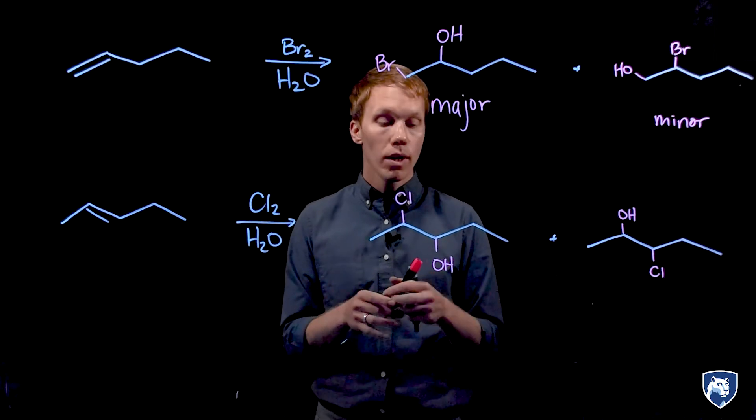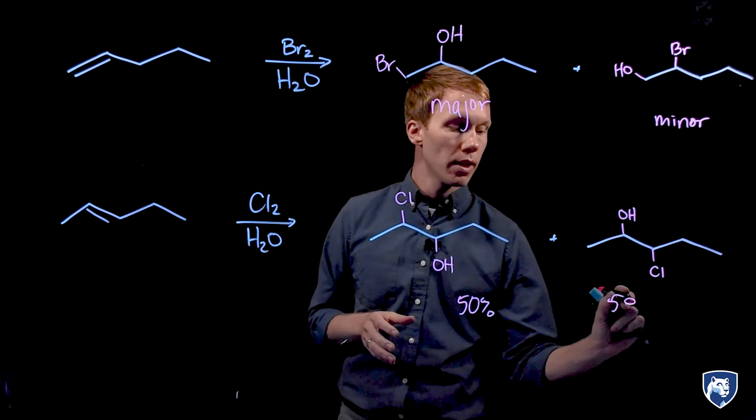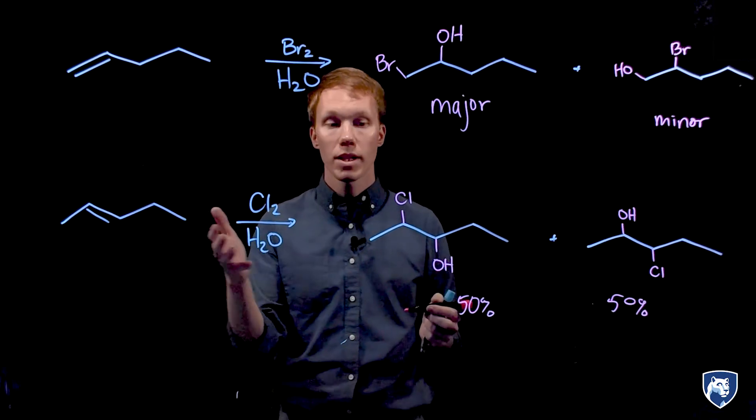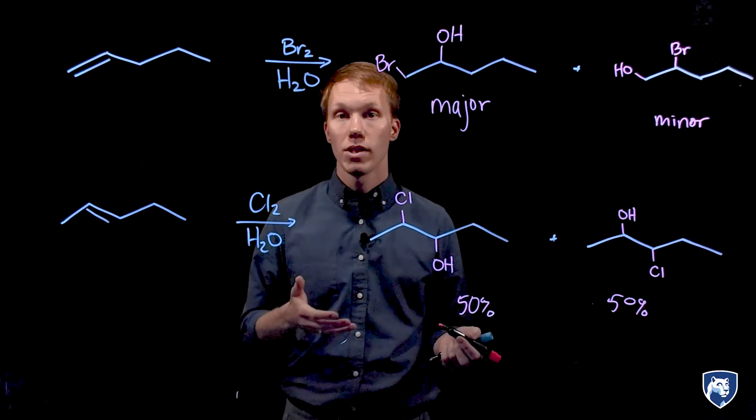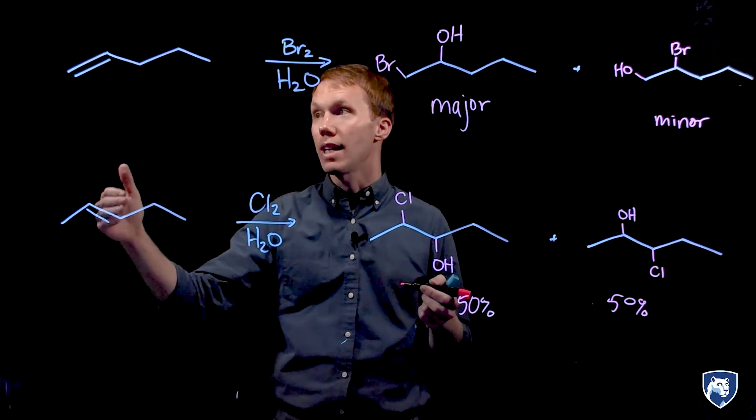So we end up with equal amounts, 50% of this one, 50% of this one, equal amounts of two constitutional isomers. So this particular example is not regioselective. The regioselectivity depends on the structure of your alkene.